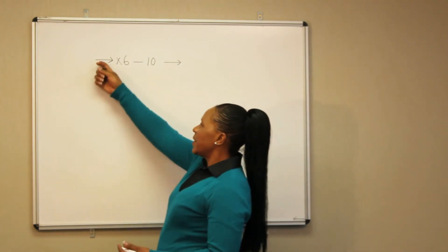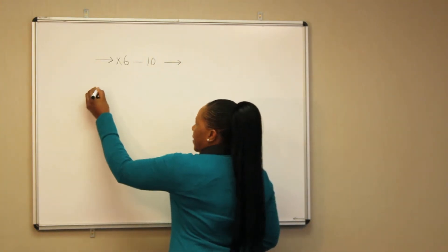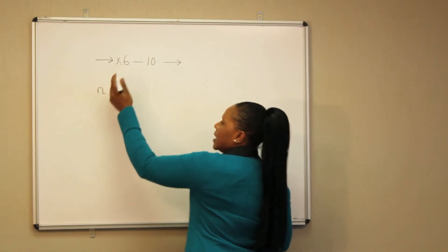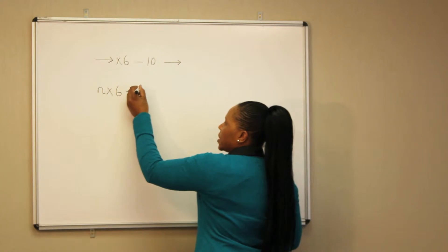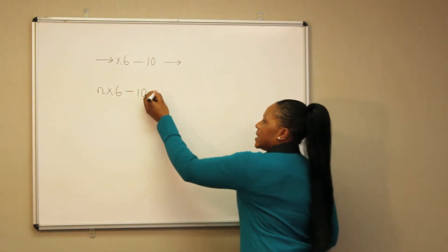Let's take, for instance, the input is n. Then it is multiplied by 6 and we subtract 10. Our output will be given as 38.